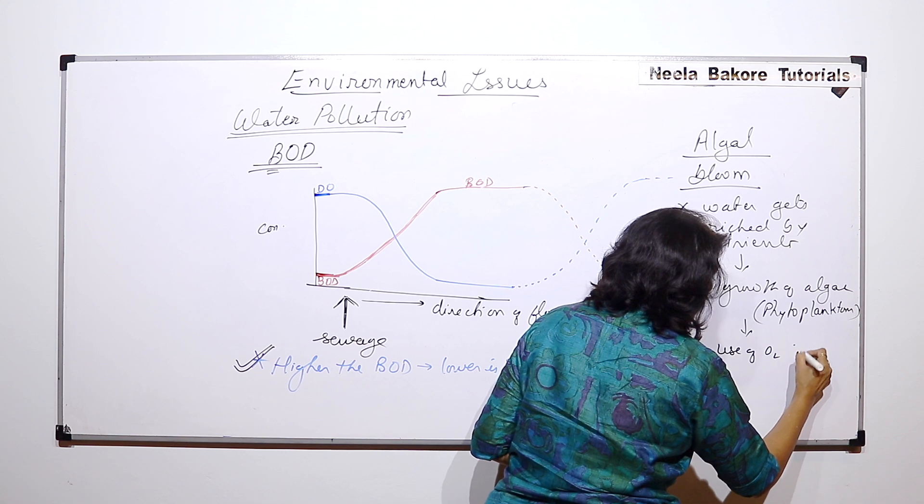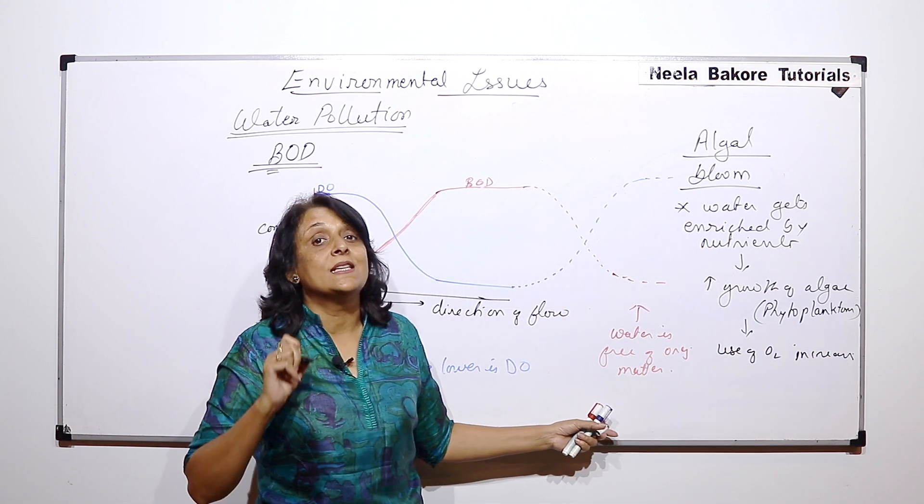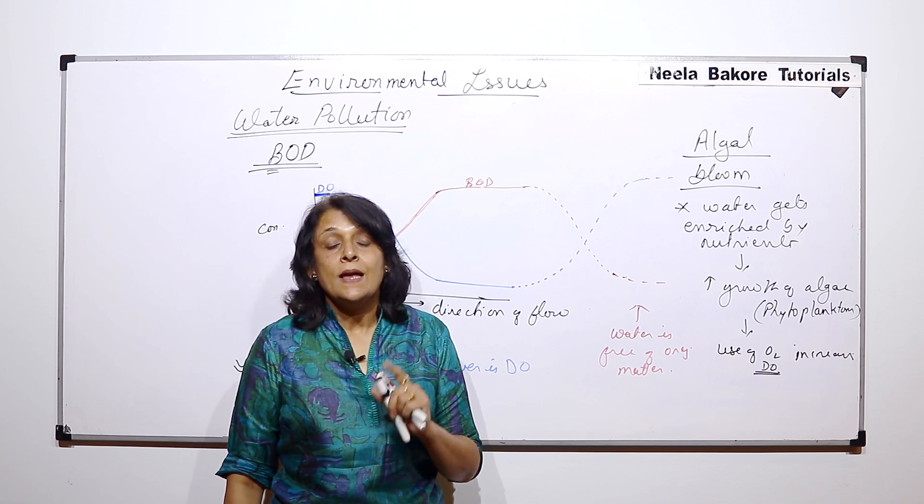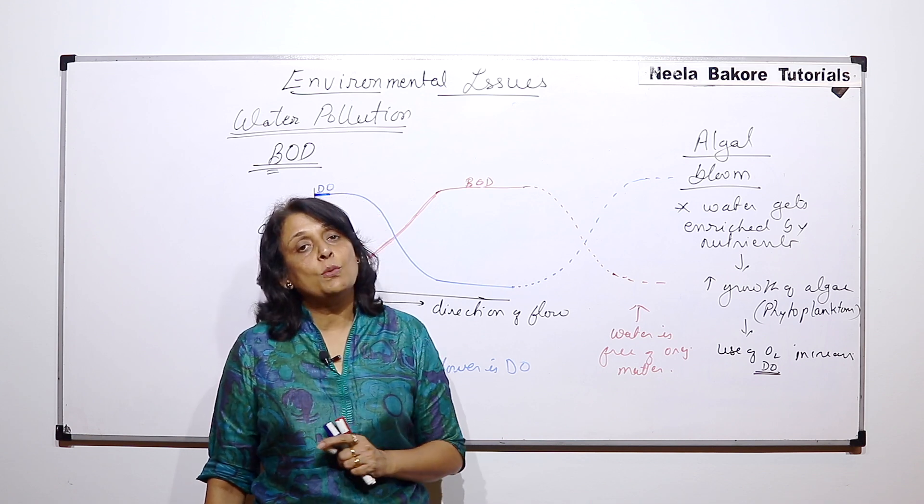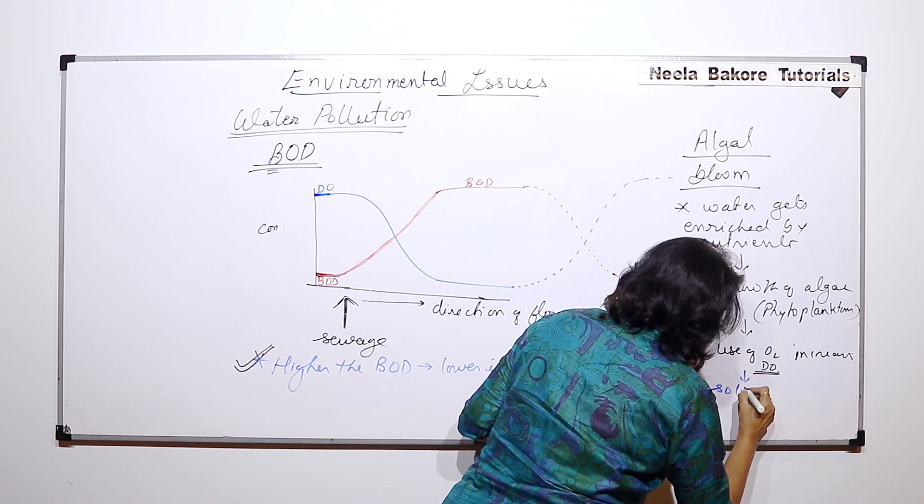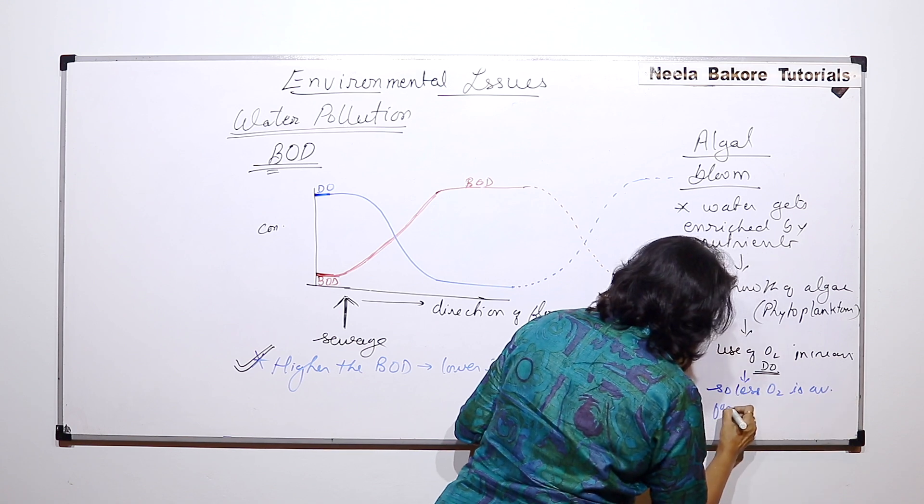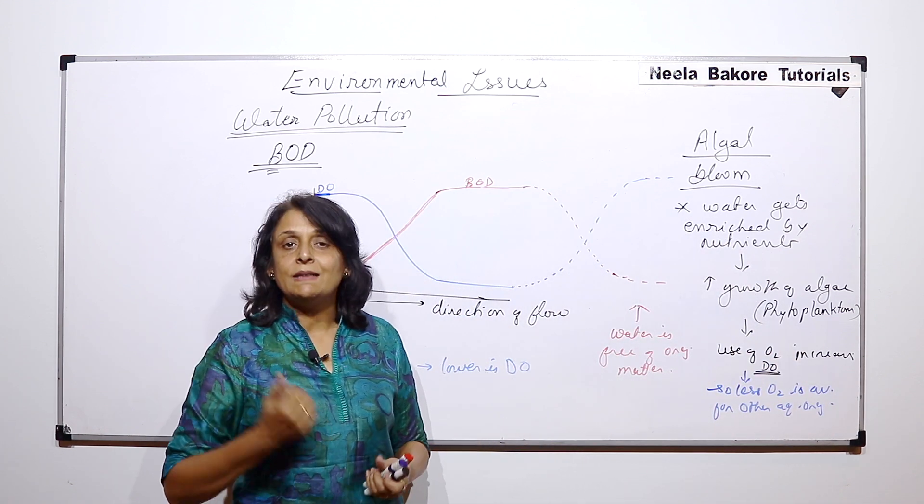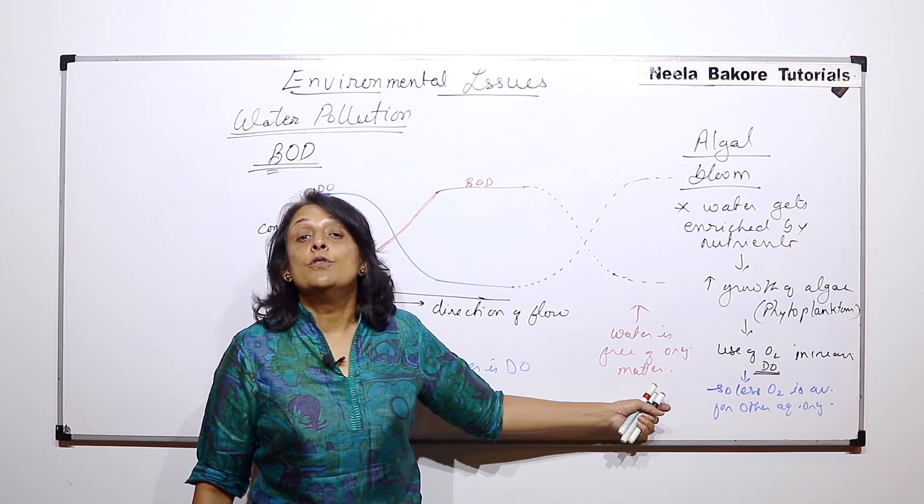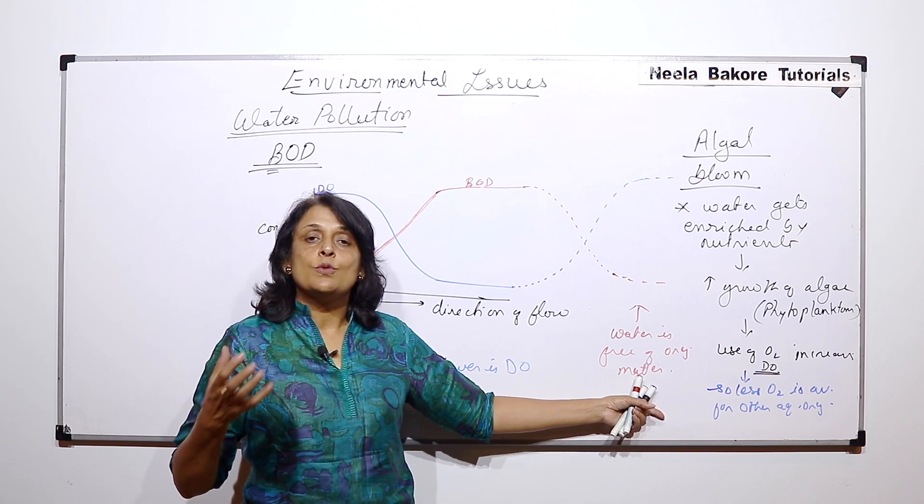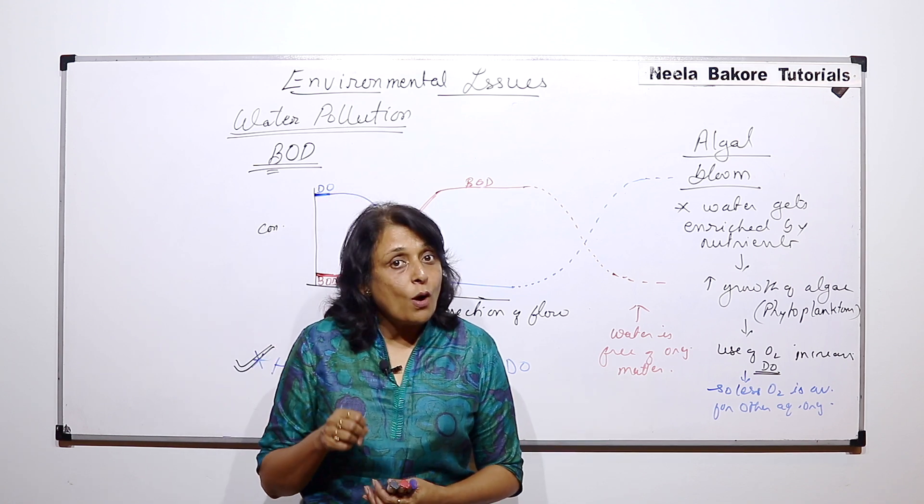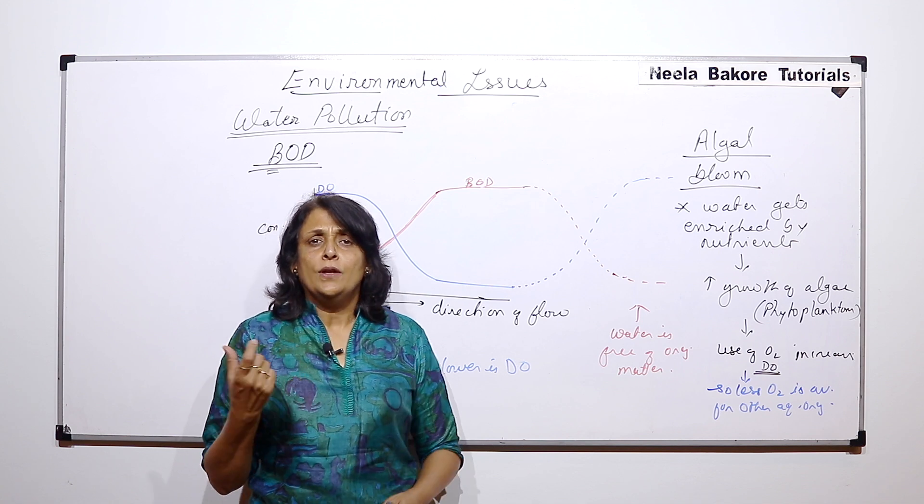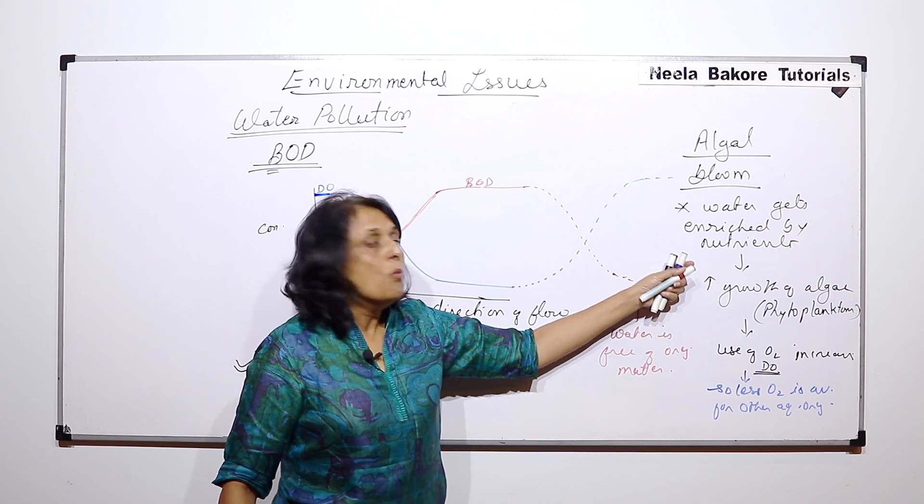These algae are going to use oxygen, and use of oxygen increases. This oxygen which they are using is the dissolved oxygen. If algae uses most of the dissolved oxygen, less oxygen is available for other aquatic organisms. If other aquatic organisms like submerged plants or animals don't get oxygen, it would result in their death. Their dead bodies would add into the water, which is organic matter getting added, so this water will have more and more organic matter.